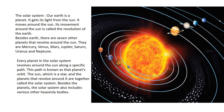The seven other planets are Mercury, Venus, Mars, Jupiter, Saturn, Uranus, and Neptune. Every planet in the solar system revolves around the sun along a specific path. This path is known as the planet's orbit. We can see that all the planets are in their own orbit around the sun.